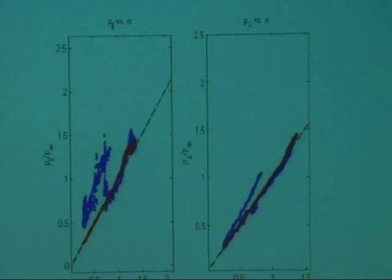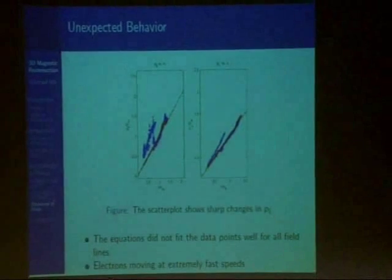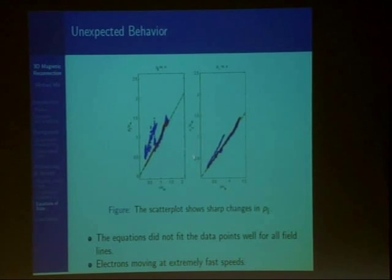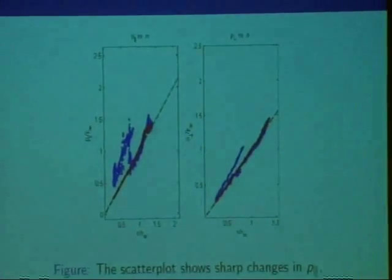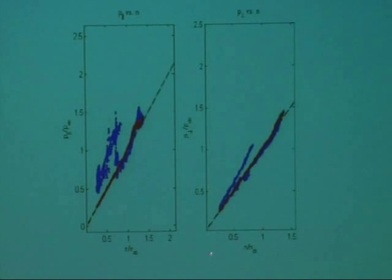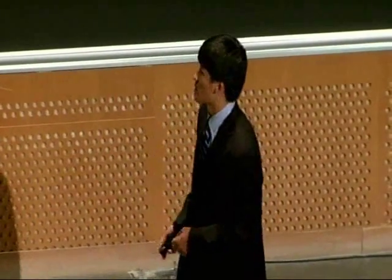But for some of the field lines, this just wasn't the case. For a very few of the field lines out of the thousands we looked at, it turned out like this. The equations did not fit the field lines that well. You notice what's unique about this, on the blue points on this plot, is that it changes sharply in two locations. This was really unexpected. Because in plasmas, electrons are highly energized, so they're moving at extremely fast speeds along these field lines. For the pressure to just change suddenly was something that we never observed before in the two-dimensional simulation and something that we did not expect to see.